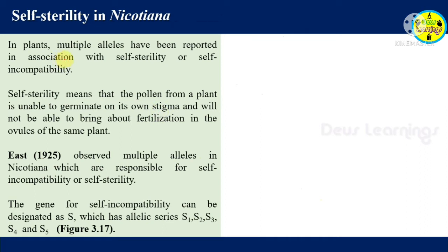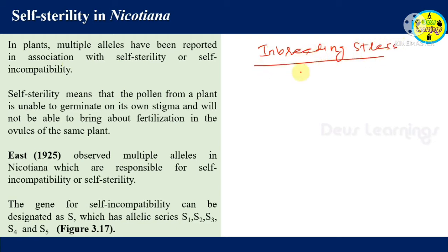We go to self-sterility, nicotine, and sex determination — how plants prevent inbreeding stress. Inbreeding stress occurs when a particular population breeds within itself. Recessive genes accumulate, and there may be problems due to recessive gene-dependent diseases. To stop this, plants have developed a method.